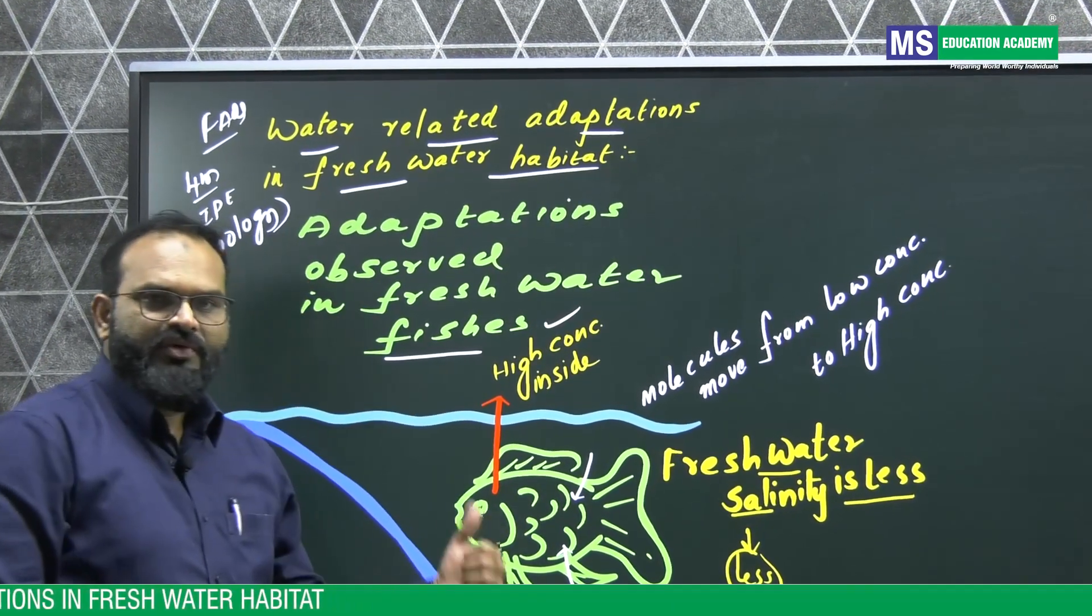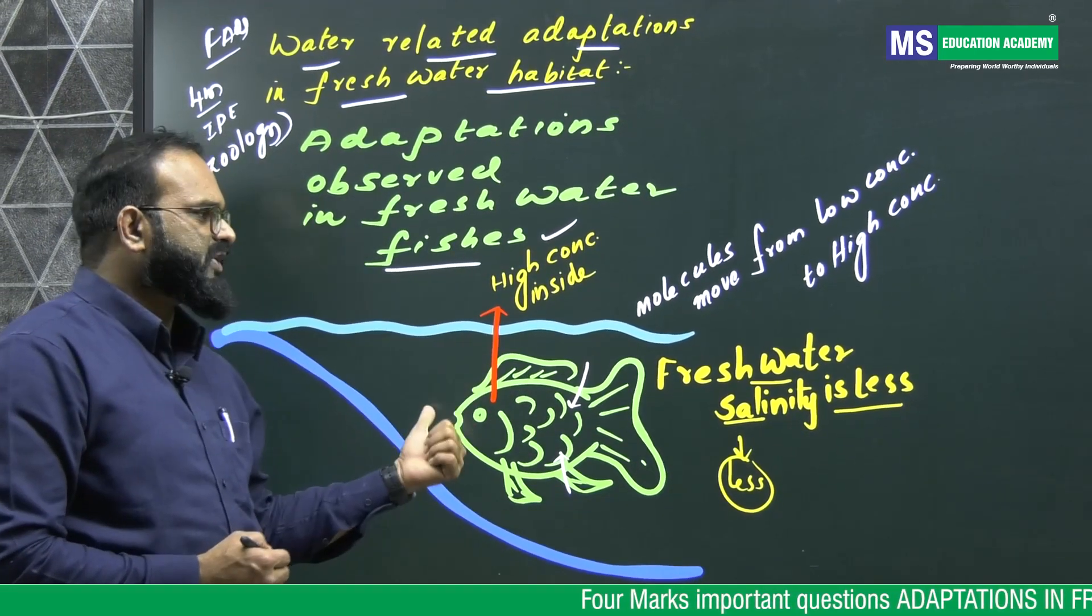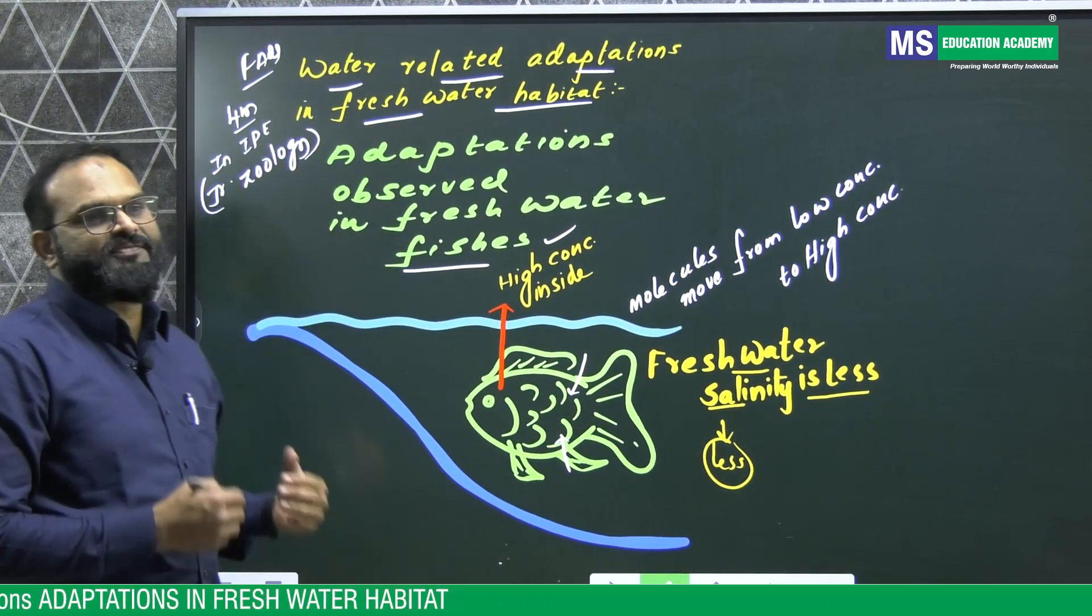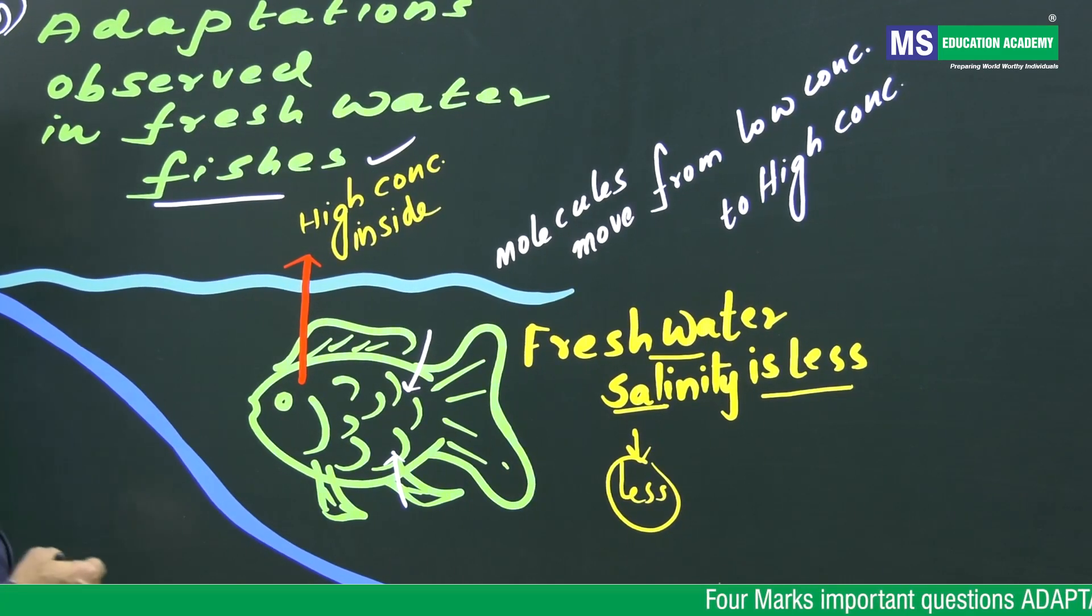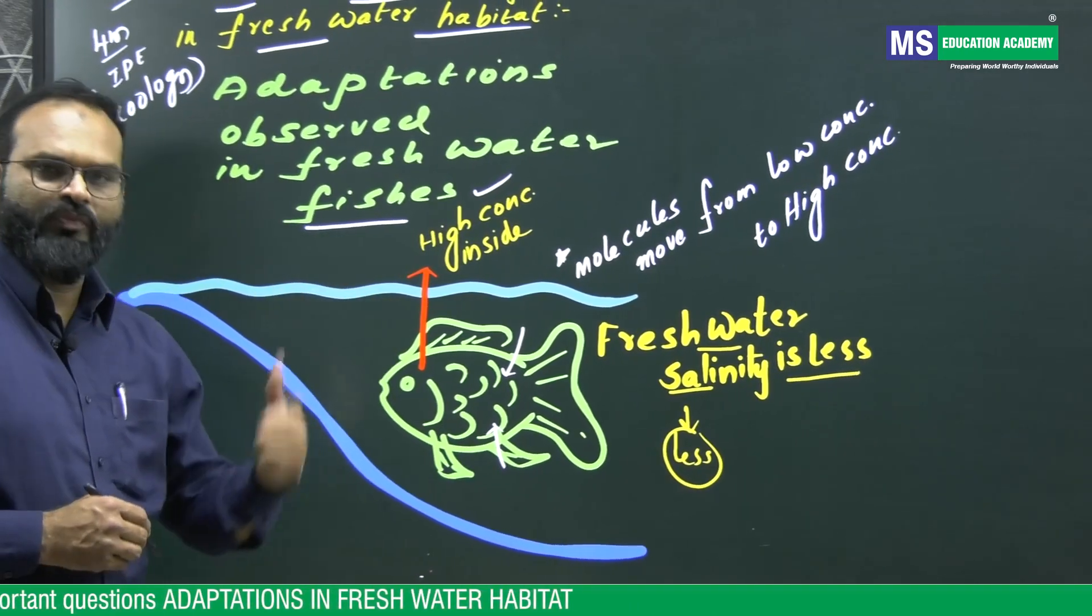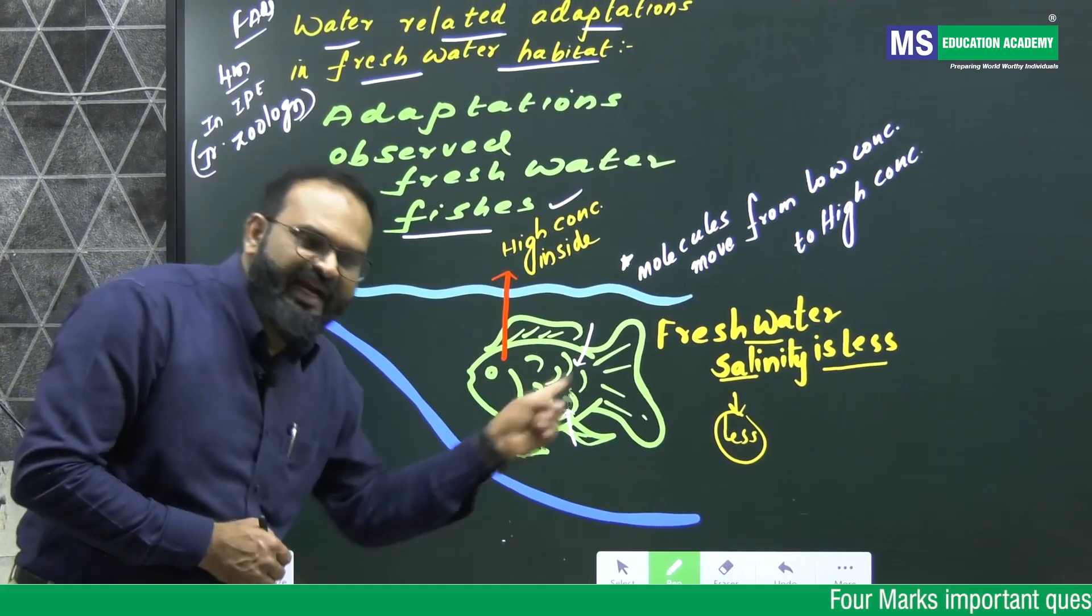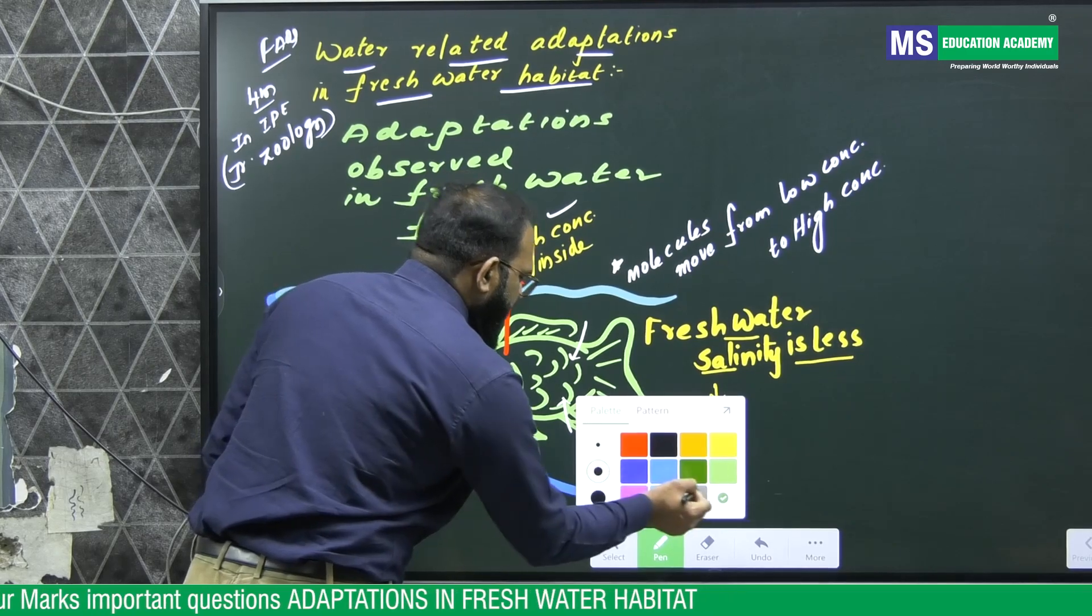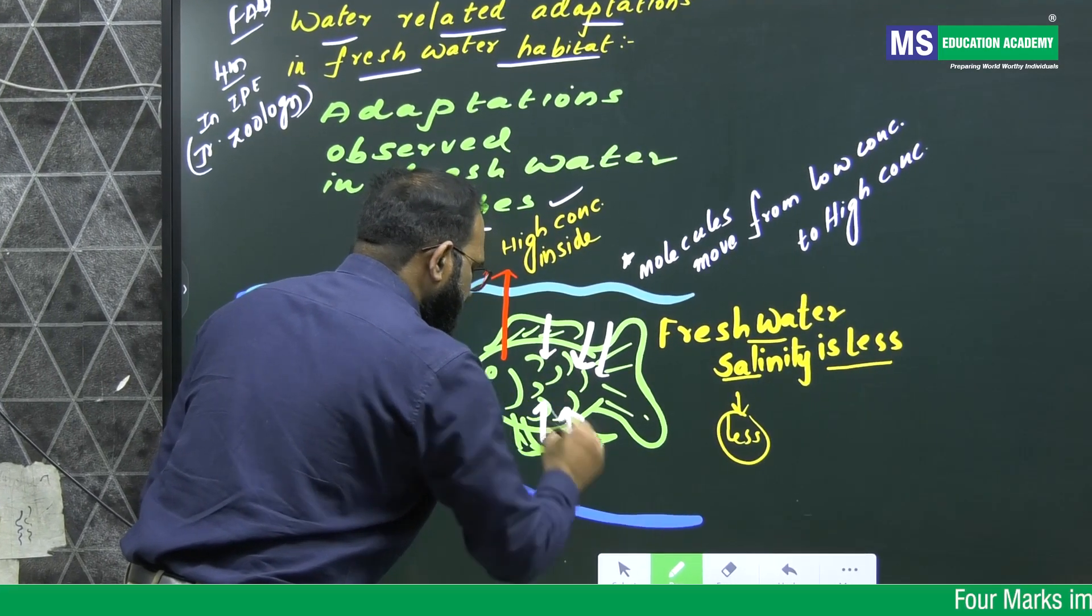First, let us take the problems faced by fishes living in freshwater. As you know, the salinity in the freshwater is less and the salinity in the fish body is more. Now what problem this fish faces and how it overcomes and what are the adaptations seen in these fishes. As you know, molecules move from a level of low concentration to high concentration. Here water salinity is less and fish body inside salt concentration is high.